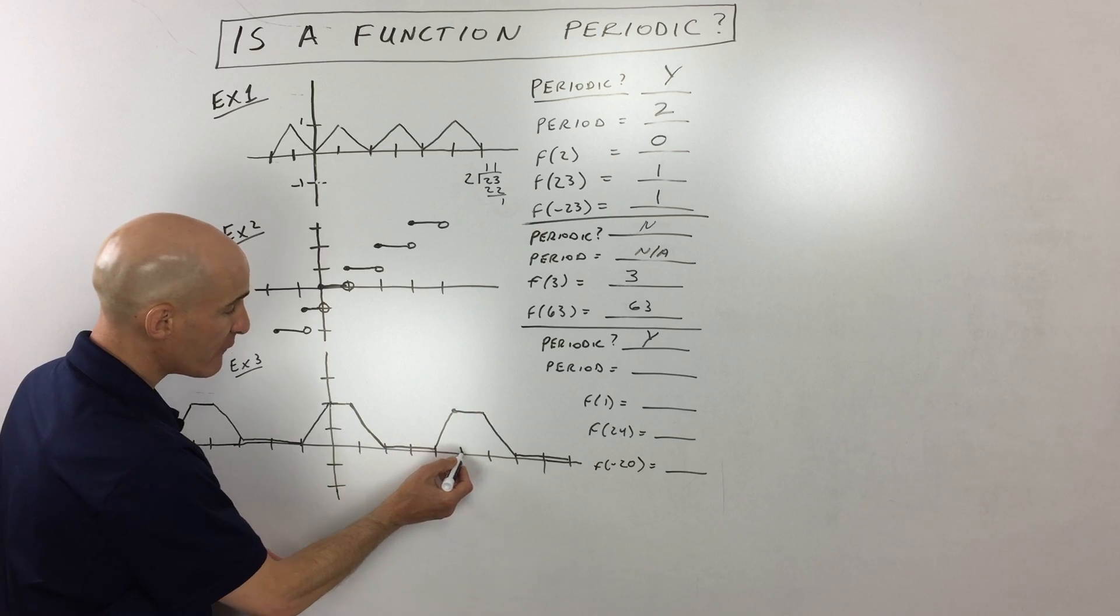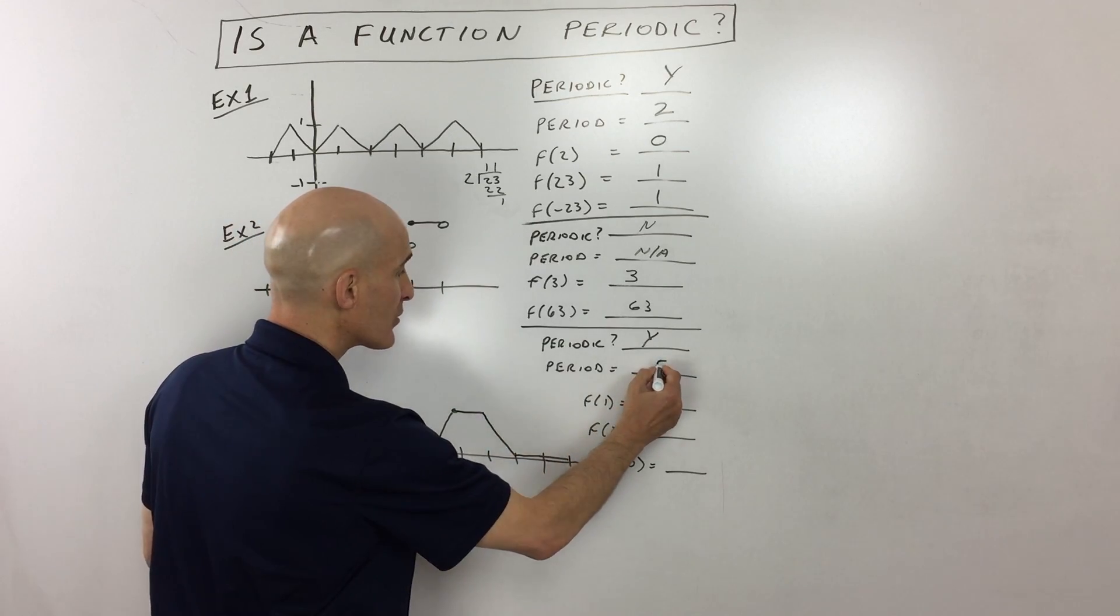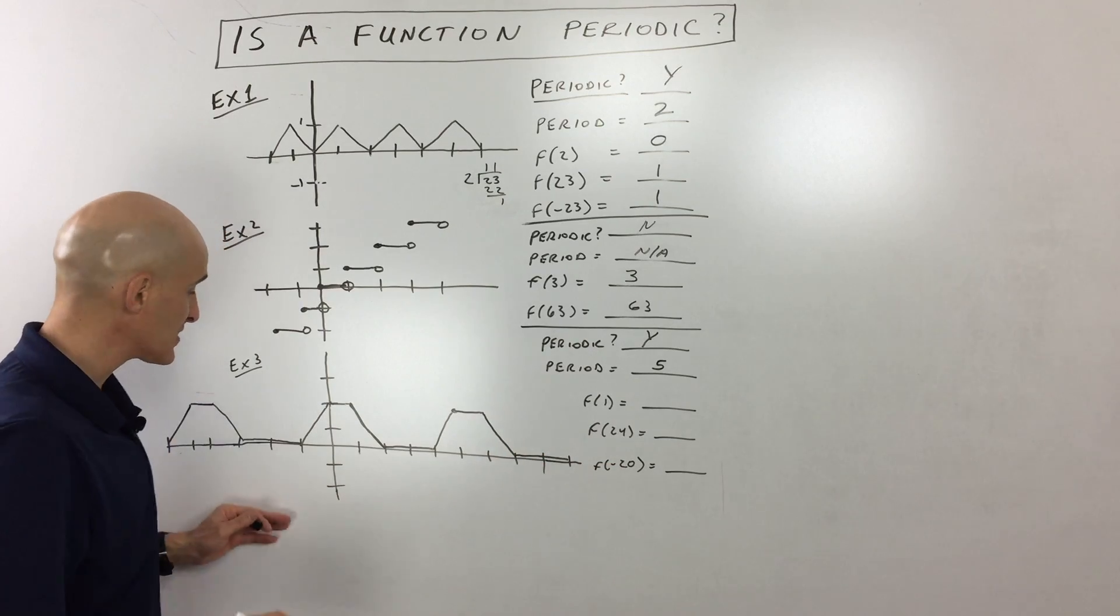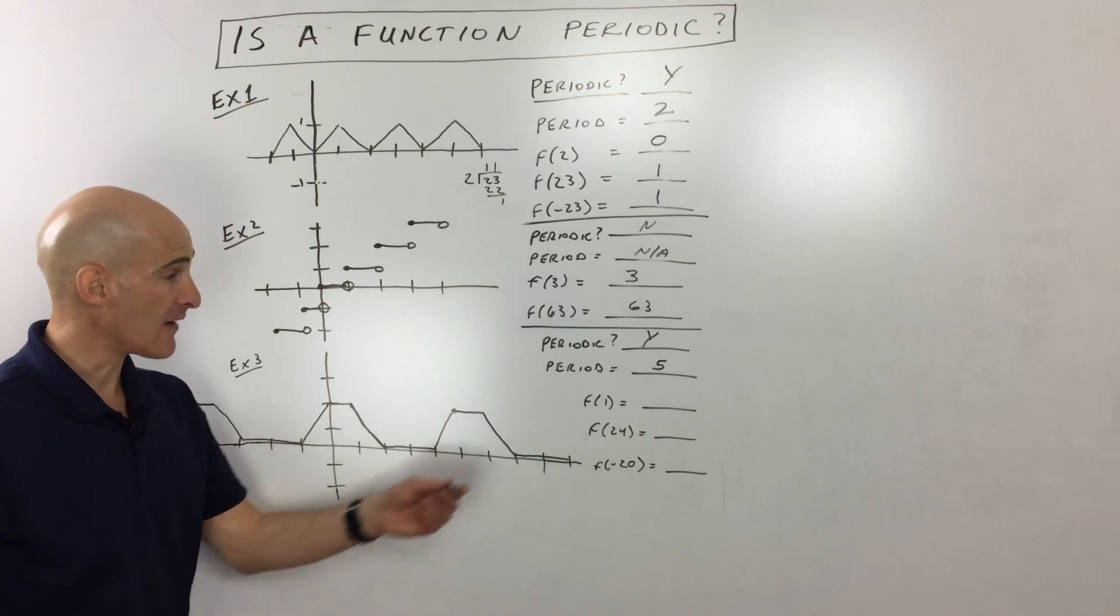It's one, two, three, four, five. So you can see that our period is going to be five. Okay. Just verify that that repeats, but it looks like it's five units.